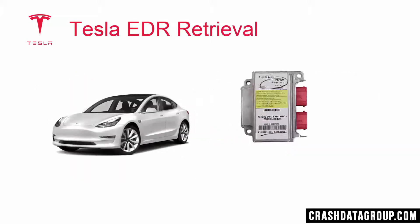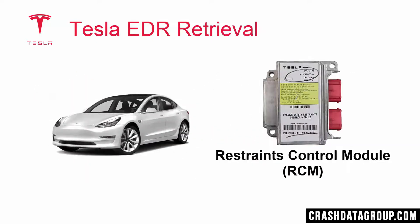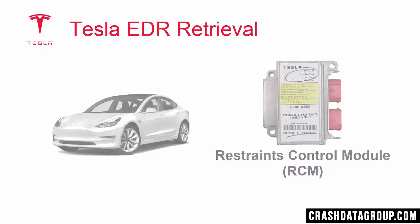EDR data in Tesla Vehicles is stored in the Restraints Control Module, or RCM. RCM is Tesla's term for the widely used term of the Airbag Control Module.